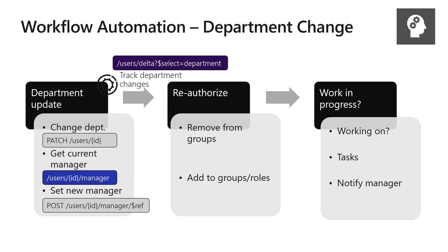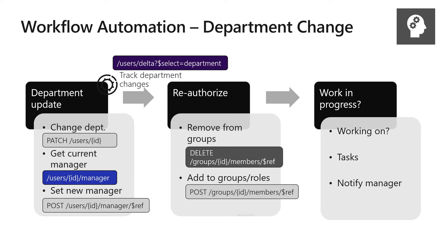When Delta Query tells you that a department change has happened, you can remove the user from any groups that were giving them access to resources they should no longer have access to. Then add them to new groups and possibly new roles — if they weren't an admin before, maybe they are now, so you can add them to a directory role.